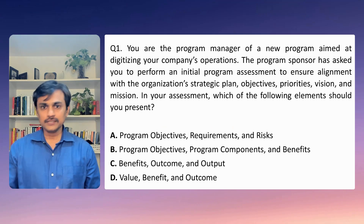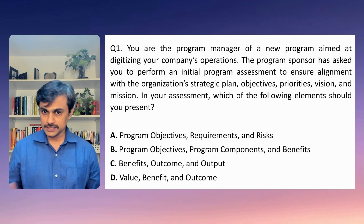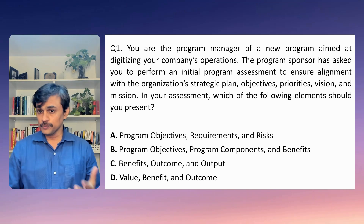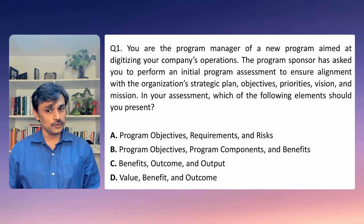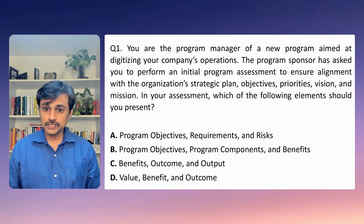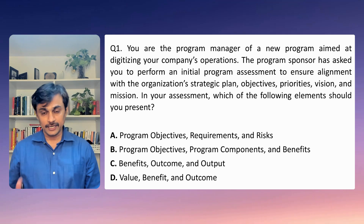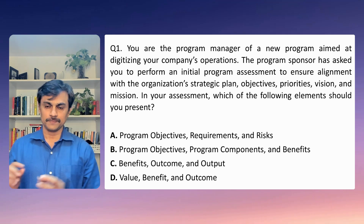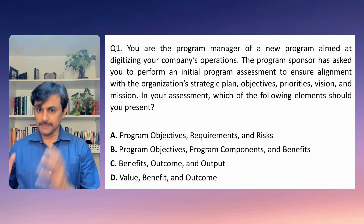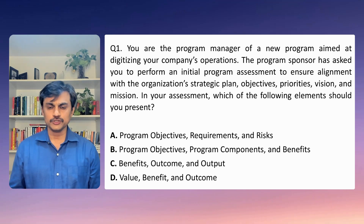You can pause if you want to work through the question before the answer is given. Question one: You are a program manager of a new program aimed at digitizing your company's operations. The program sponsor has asked you to perform an initial program assessment to ensure alignment with the organization's strategic plan — its objectives, priorities, visions, and missions. In your assessment, which of the following elements should you present?